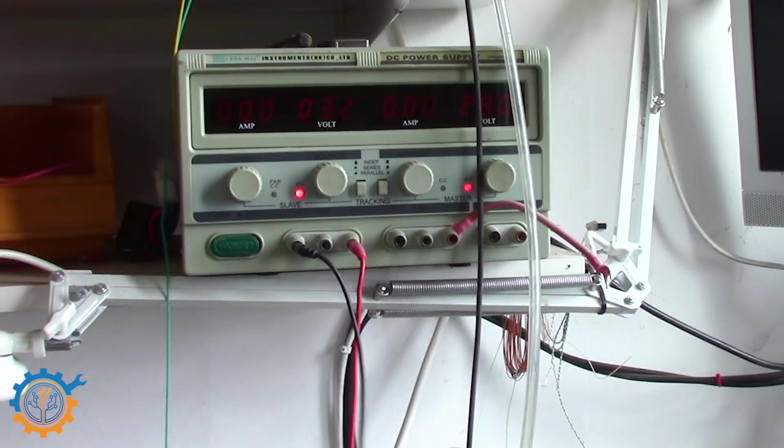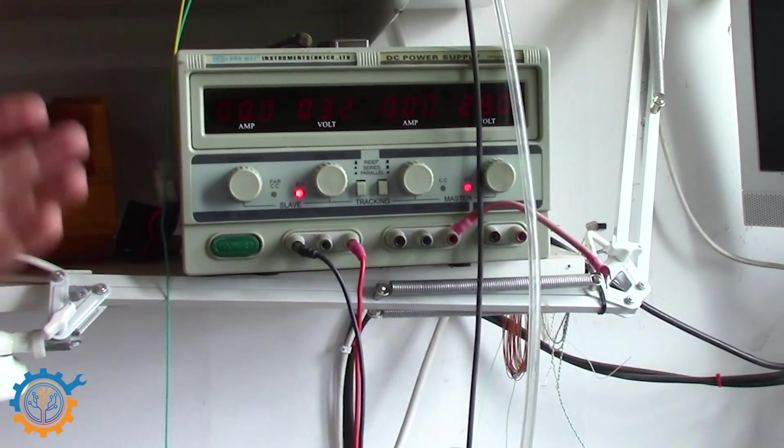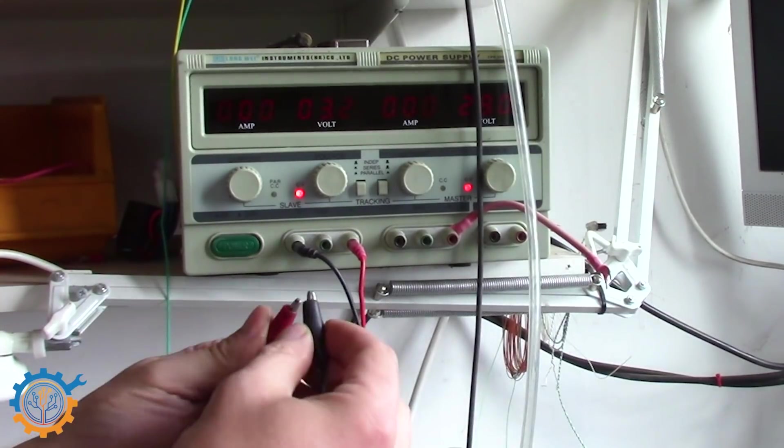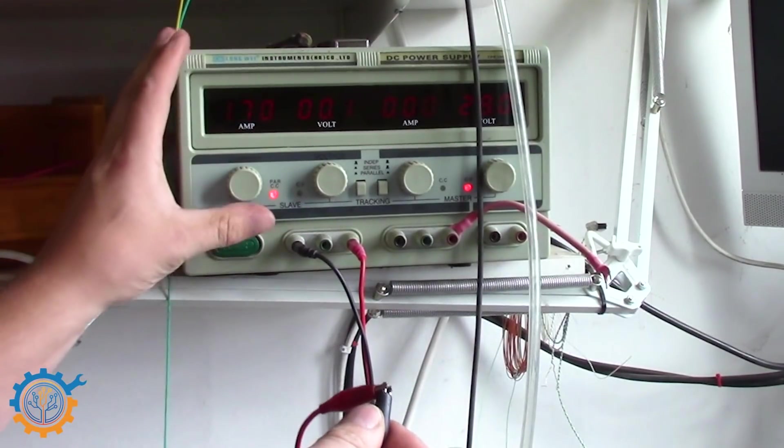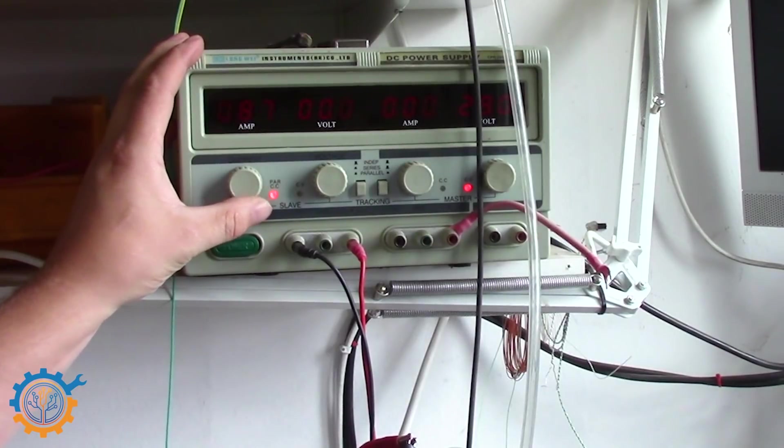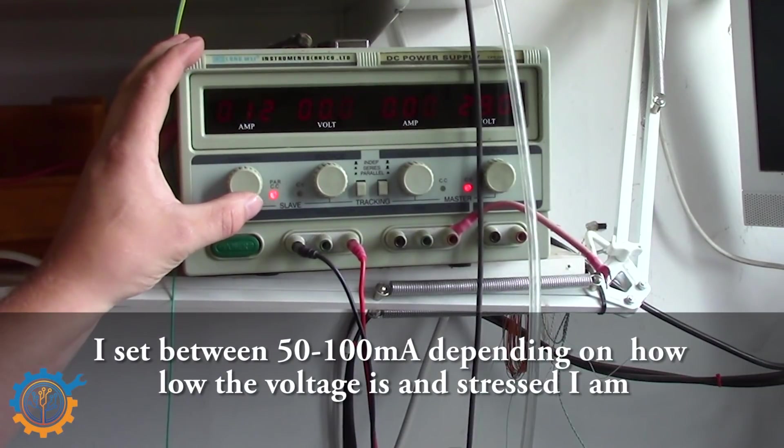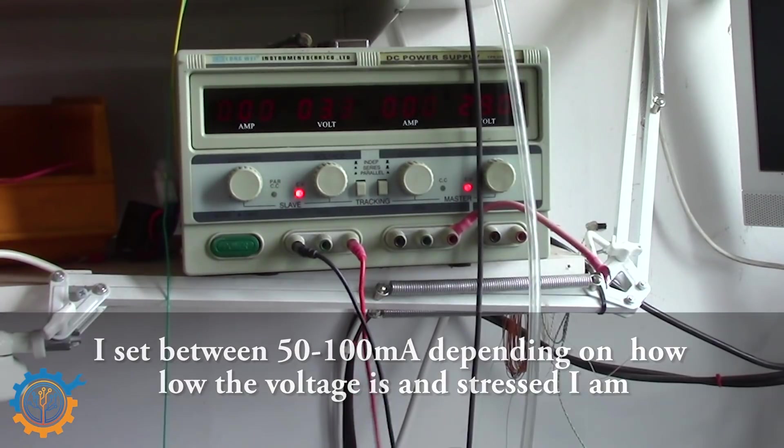Next thing is to set the current. You always want to set the current so you don't rush it too much. And the easiest way is just a short system. And you set the current to, I would say, somewhere around 100 mA.